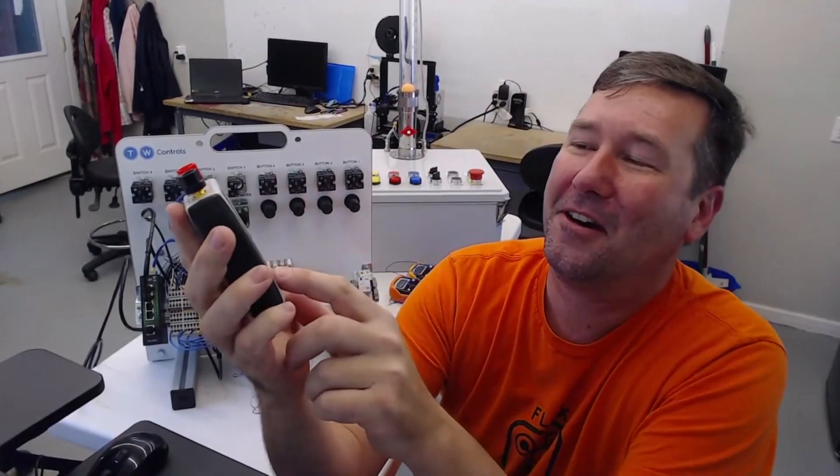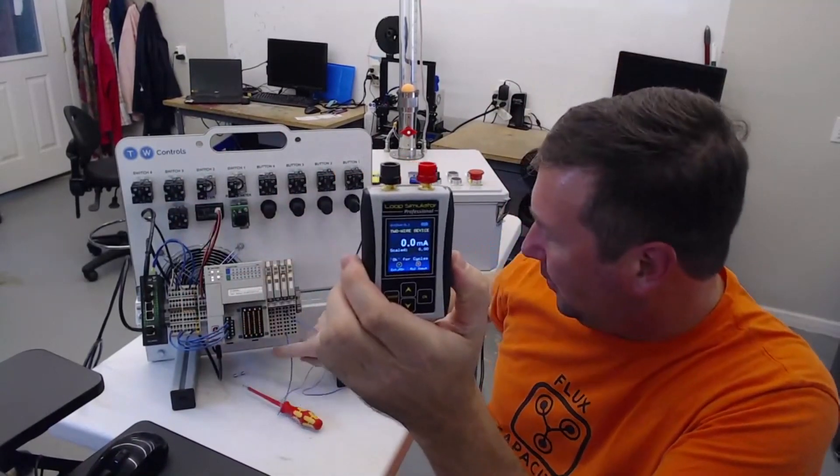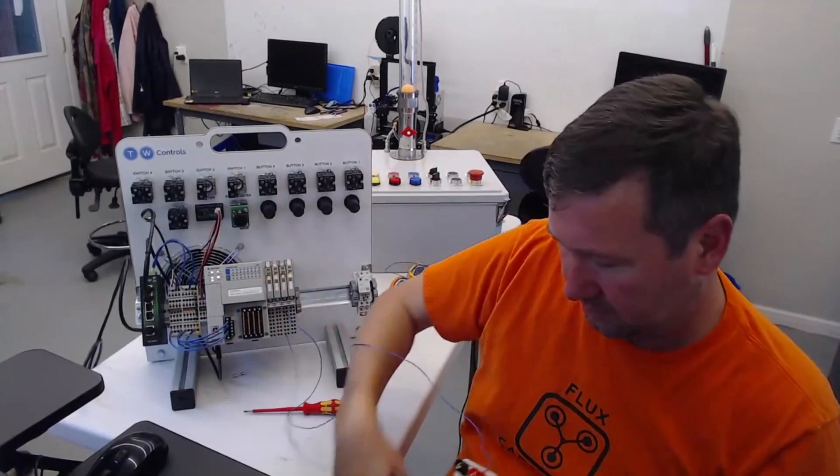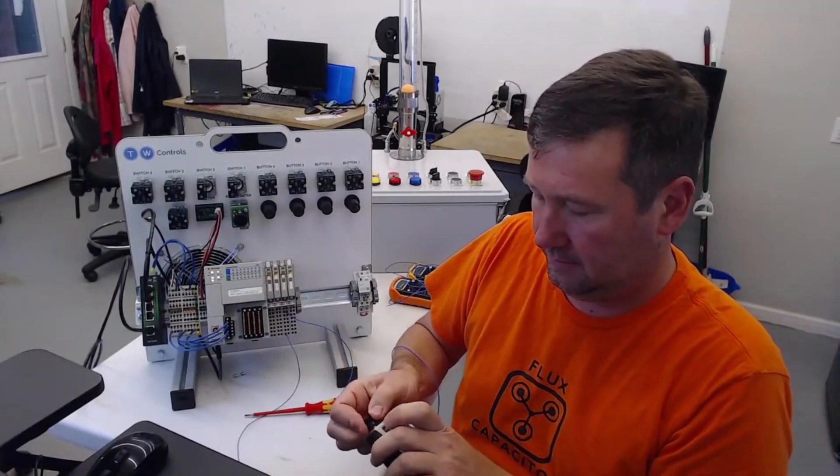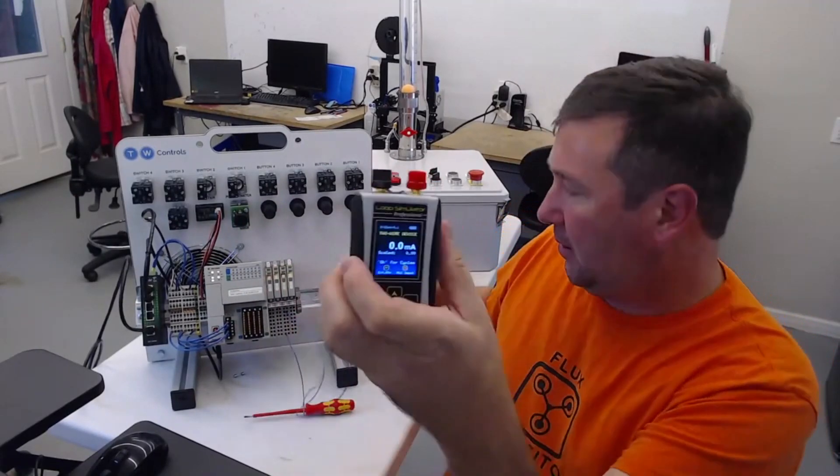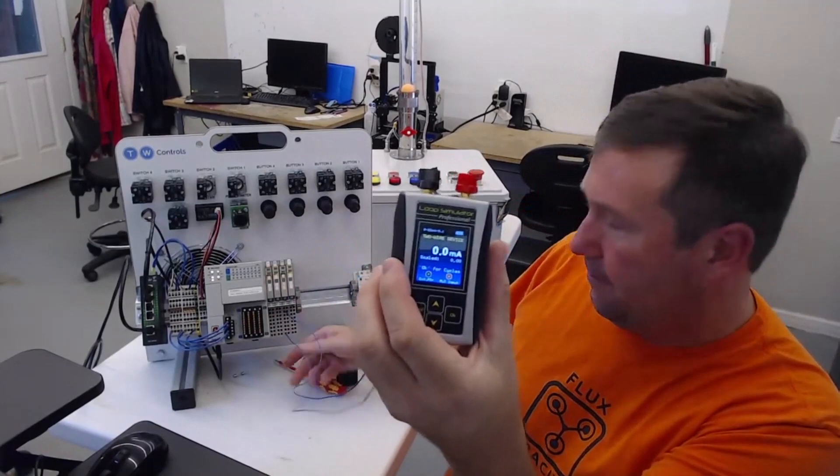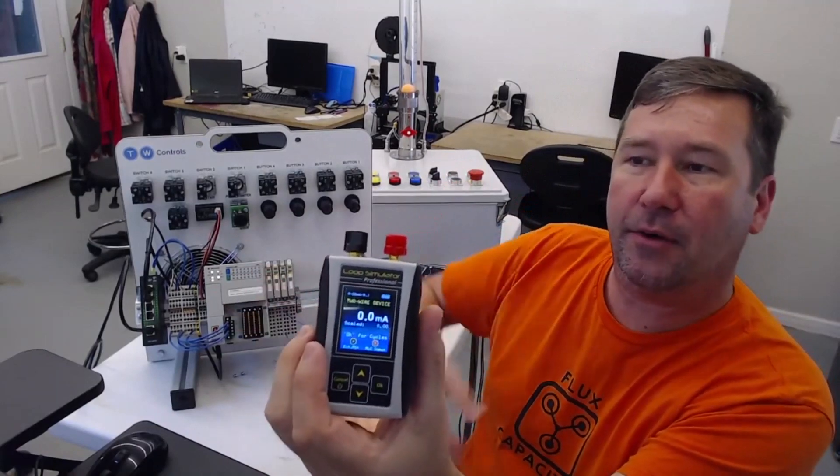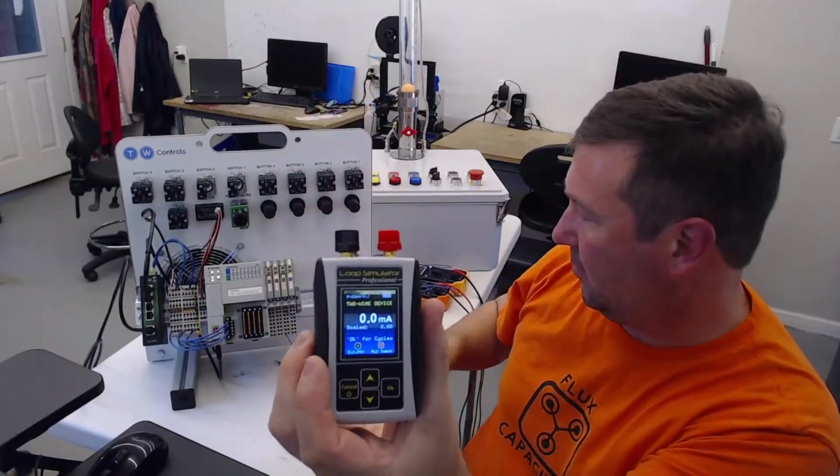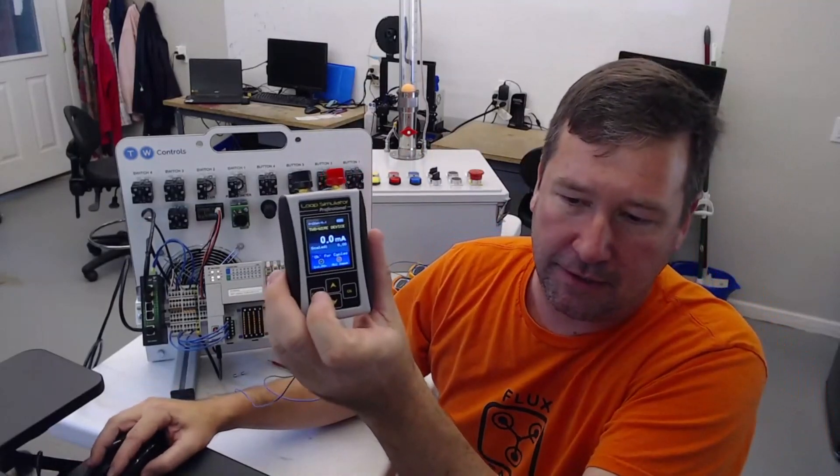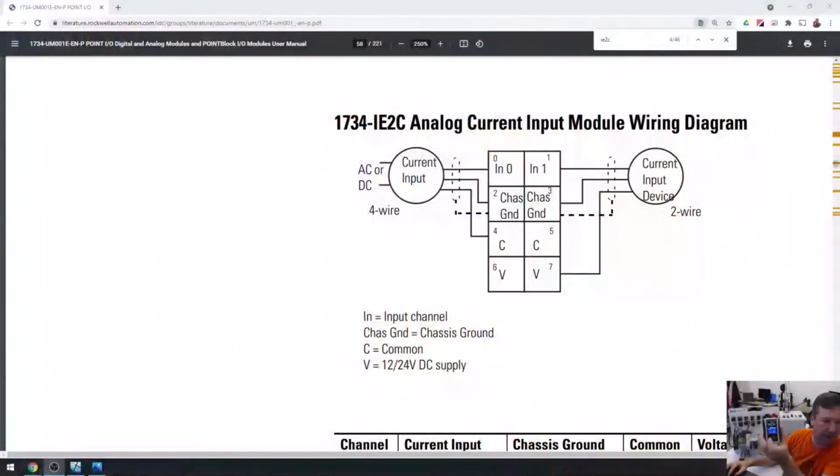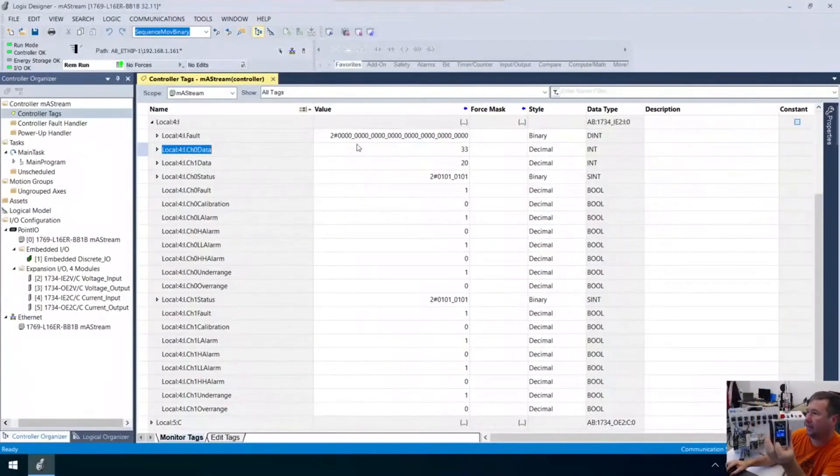So now we have plus voltage coming out of that bottom terminal, going to the black, and then our red is going back to our input. So now let's go back over to our screen. And let's look at that value. And all right, right now I'm at zero milliamps. So I'm going to bring it up to four.